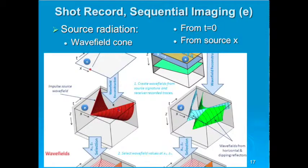That reconstructed source wave field does not include any reflections or diffractions. It will include ray bending — Snell's law — through velocity boundaries where you include them in your model. You could call it a down-going wave field, but at the edges, impacting on steep dip reflectors, it's left and right going. So we call it wave field continuation — we let the direct P wave go wherever it goes.